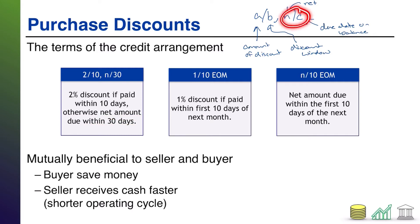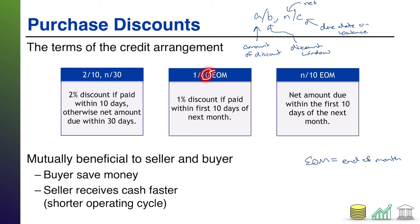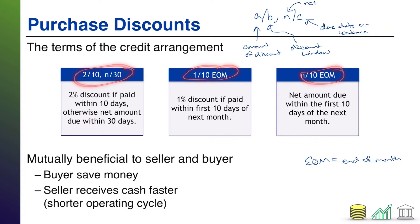You might see one special case: instead of N slash C, you might see EOM, which stands for end of month. It's a little misleading because you might think it means you have to pay by the end of the month, but actually it means that's when the clock starts ticking. For example, 1 slash 10 EOM means you get a 1% discount if you pay within 10 days — but 10 days from the end of the month, not 10 days from now. You might also see N slash 10 EOM, meaning the net amount is due within 10 days of the end of the month. The most common format you'll see, though, is A slash B, N slash C.